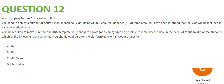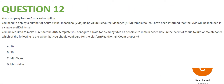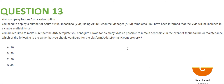Question 12: the thumb rule is each availability set can have three fault domains and 20 update domains. In this question, the number of VMs and the number of availability sets are not known, so we go with the maximum value. We set the platform fault domain count property to its maximum.